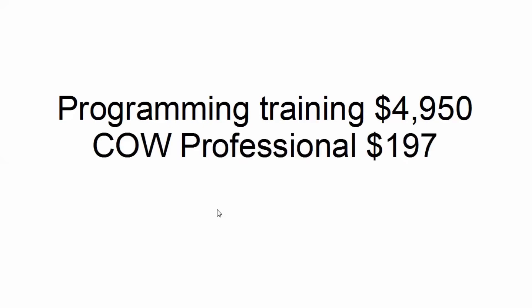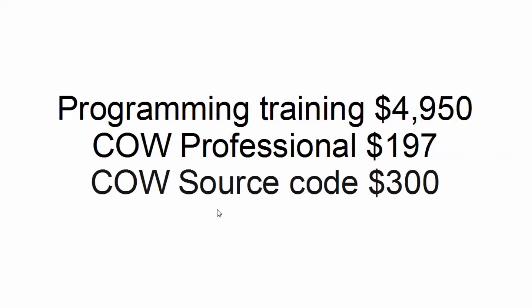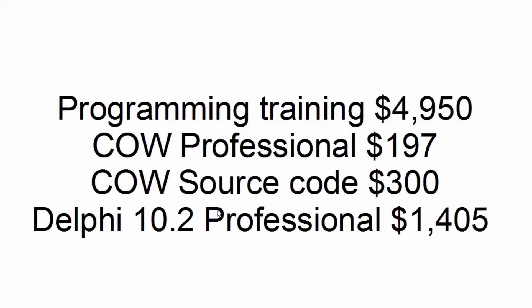Cal Professional, which you need to own, $197 — most of you watching this video already own that. The source code for Cal, $300, which we start with and will end with with the iPad version. And Delphi 10.2 Professional, which is $1,405 — that's the tool I use, and it also allows you to make mobile apps.